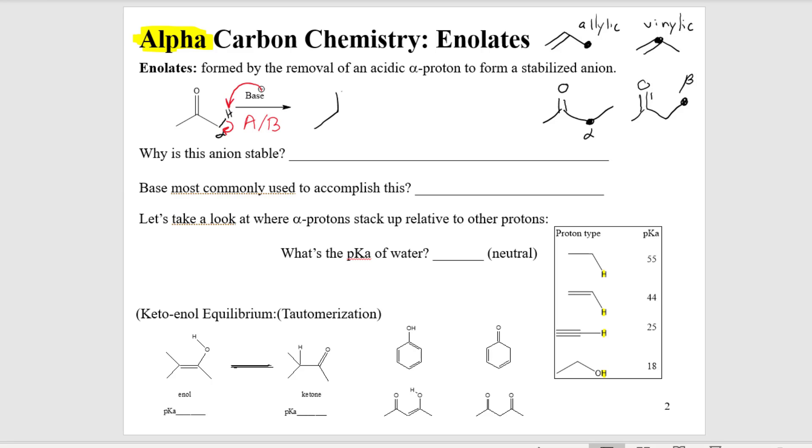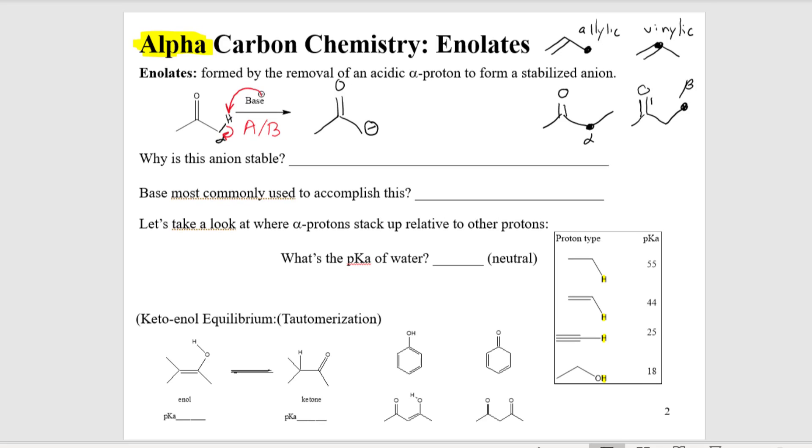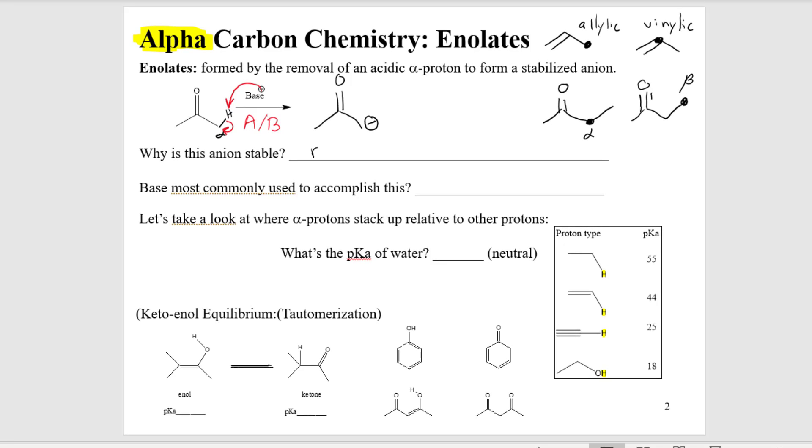Okay, there's my anion. Why is this anion stable? Well, relating it to allylic, it's stabilized by resonance. So let's draw that resonance structure.